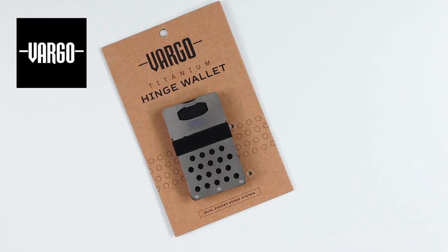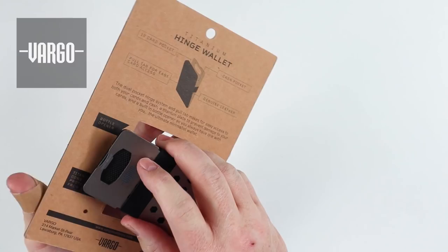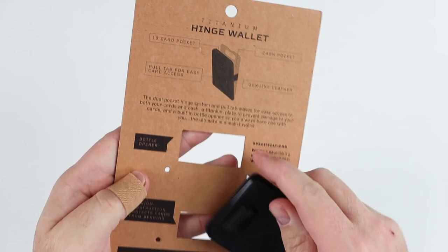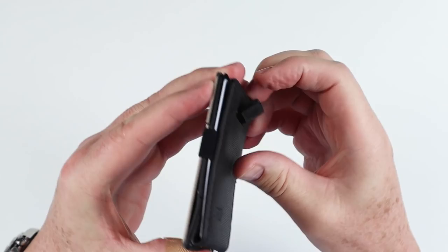We bring you seven more unique wallets from the Walletopia shelves. Old Wallet. The Vargo Titanium Hinge Wallet. Let's take a look here. It slides off this information here on it and what it provides. Cards pull tab.